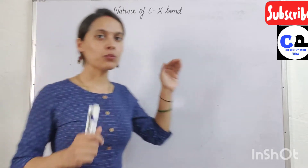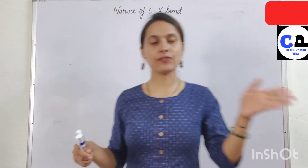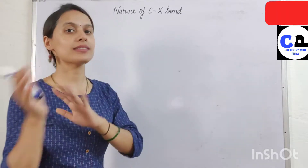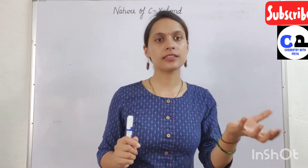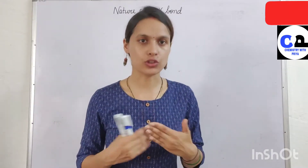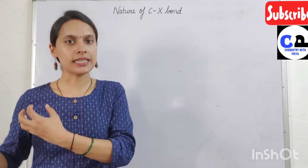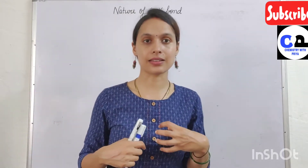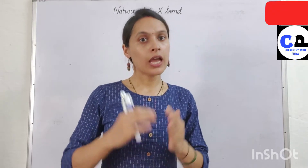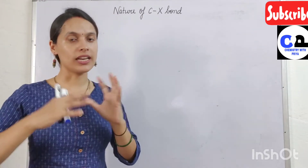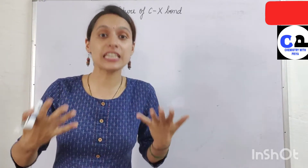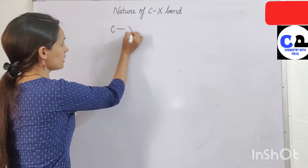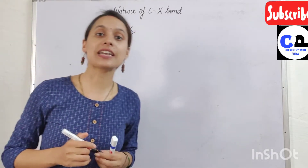When we move left to right in a period, electronegativity increases. Electronegativity is the tendency of an atom to attract the shared pair of electrons towards itself. Now, due to the increase in electronegativity, if we compare carbon and halogen, the electronegativity of halogen is greater than that of carbon.